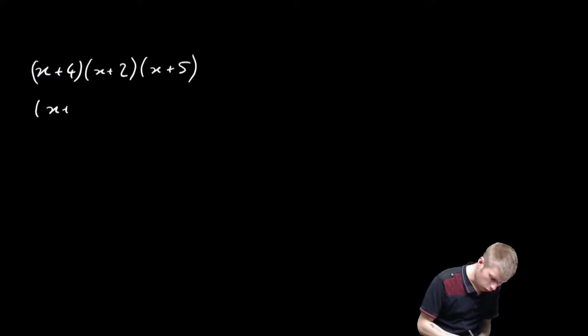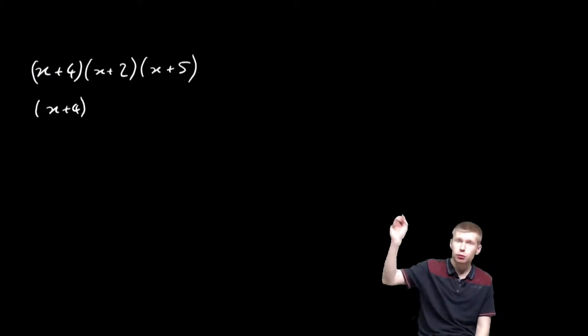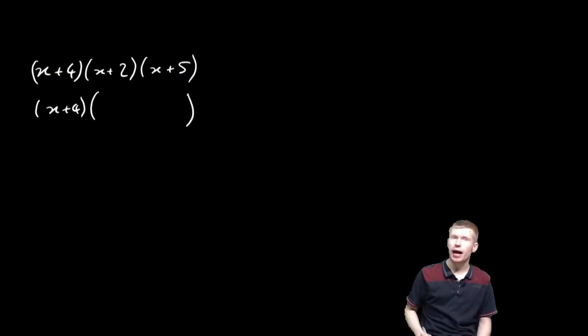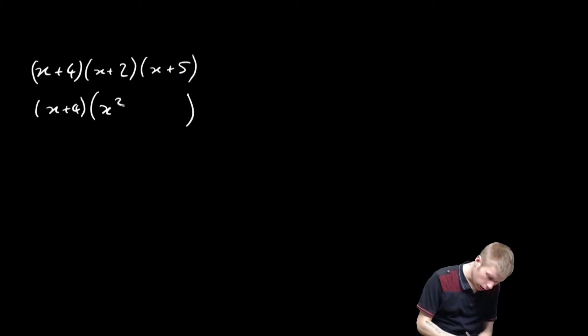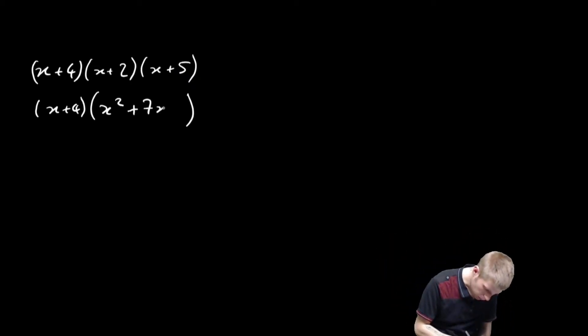Okay, so (x+4) multiplied by (x+2)(x+5). That's what I'm going to work out. So what's (x+2) multiplied by (x+5)? Imagine the (x+4) wasn't there. So I'd get x², plus 2x plus 5x, that's plus 7x. And then I get 2 times 5, which is plus 10.